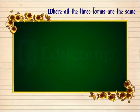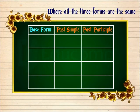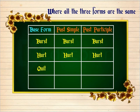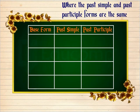Here is a list of some more irregular verbs where all the three forms are the same. Base form: burst, past simple: burst, past participle: burst. Base form: hurt, past participle: hurt. Base form: quit, past simple: quit, past participle: quit. Base form: let, past simple: let, past participle: let. Where the past simple and past participle forms are the same.